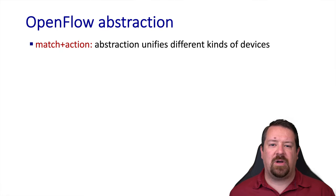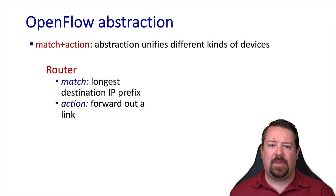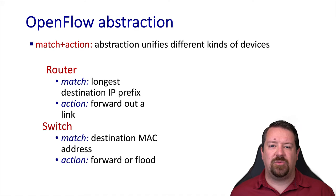One goal of this software-defined networking approach is to unify different types of devices. The traditional router performs a match against the destination address only, and it's the longest prefix type match, and the action is to forward the packet out an interface. A layer 2 switch, on the other hand, which we haven't looked at in detail yet, also does destination-based forwarding based on the MAC addresses, and it has an alternate behavior where if it doesn't know where to send the frame, it will flood it out all the interfaces.